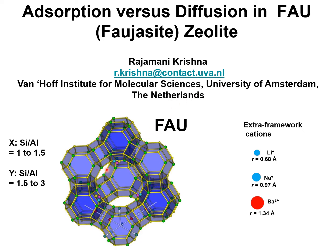In practice, faujasite zeolites are used in their cation exchange form. Depending on the silicon to aluminum ratio, they are either called X zeolites or Y zeolites. X zeolites have a silicon to aluminum ratio of 1 to 1.5, and Y-type zeolites have silicon to aluminum ratios between 1.5 to 3.